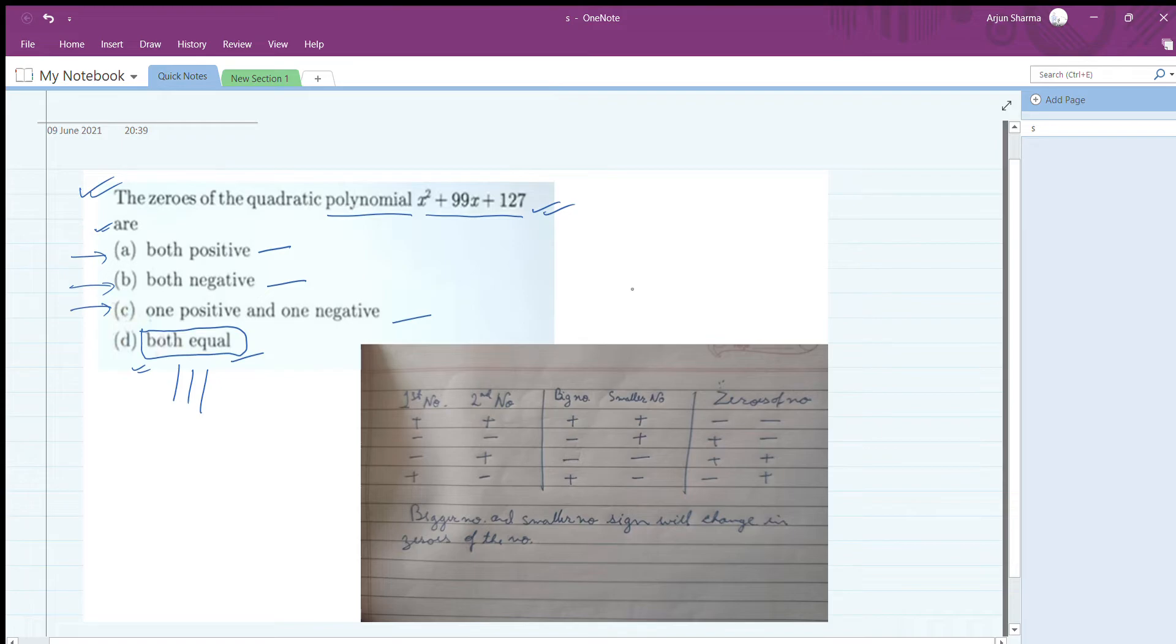So the first number here is 99, the second number is 127. Look at both numbers - they are positive. So when both numbers are positive, the zeros will be negative. So the answer is both negative.